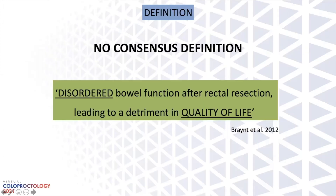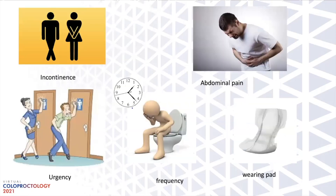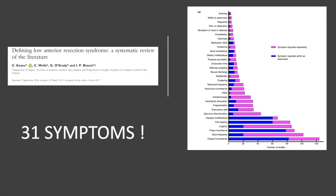There is no consensus definition on what low anterior resection syndrome is, but Brian et al. nicely defined it as a disordered bowel function after rectal resection, leading to a detriment in the quality of life of a patient. The symptoms of LAS can be varied — patients can present with incontinence, abdominal pain, urgency, frequency, and may wear a pad. In fact, a systematic review described 31 symptoms that patients may complain of or present with after low rectal cancer surgeries.